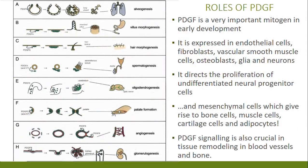PDGF is a very important mitogen in early development. It induces and activates mitosis in several cell types. It is expressed in endothelial cells, fibroblasts, vascular smooth muscle cells, glial cells, and neurons. So although it was first identified in platelets, its expression has been seen in many other cell types.